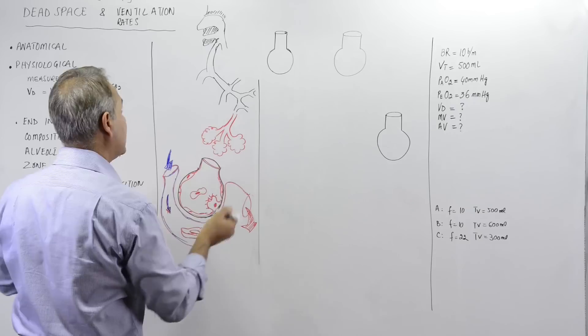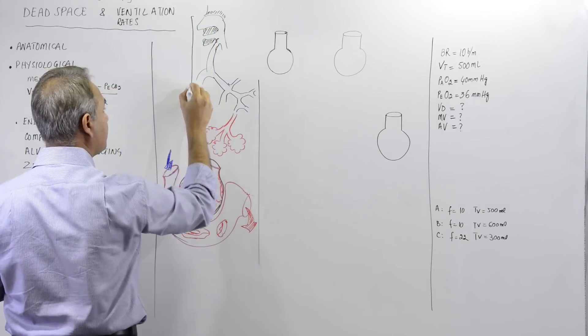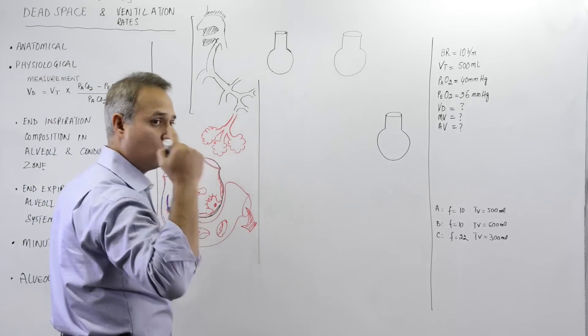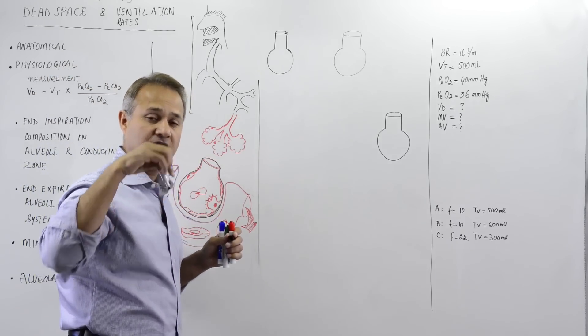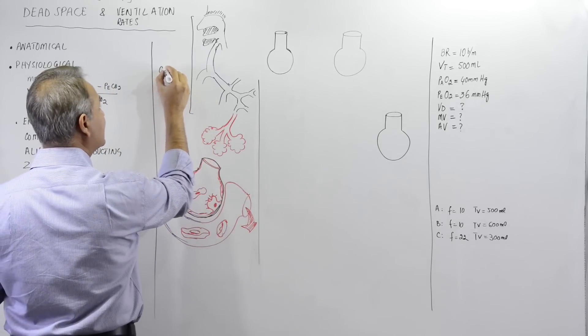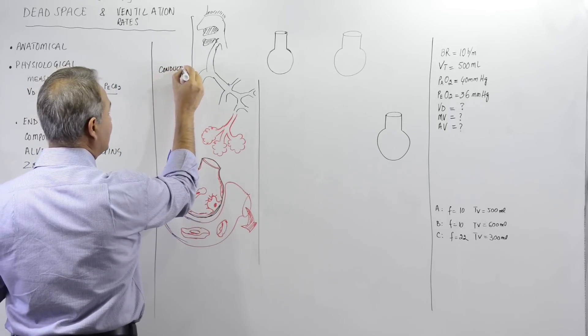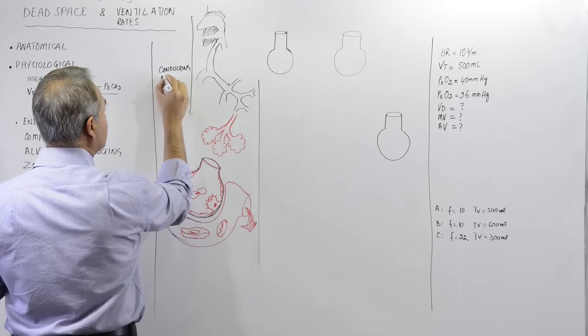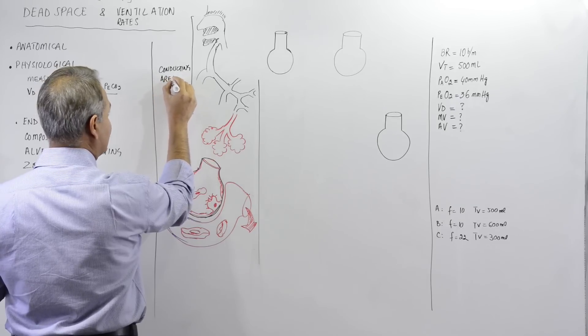And normally what happens is this area, the nose and the pharynx and the trachea and the bronchi, this is normally just the conducting area. And why is that important for us to know? Conducting zone or conducting area?